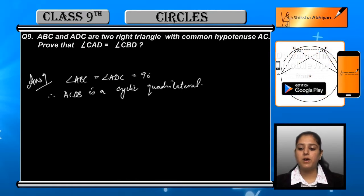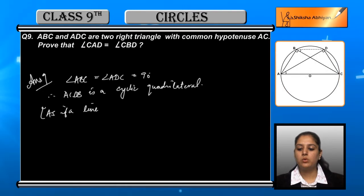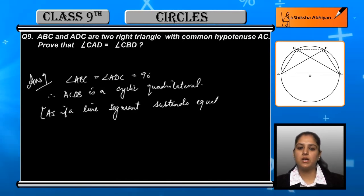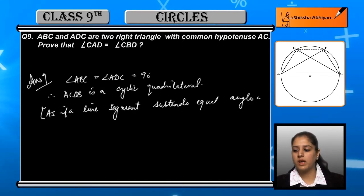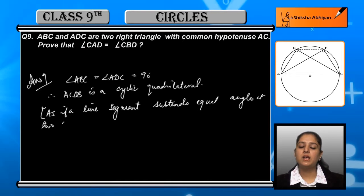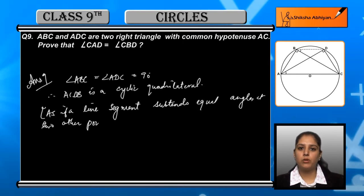If a line segment subtends equal angles, and the angles that have been formed are on the same line segment in the same segment of the circle.